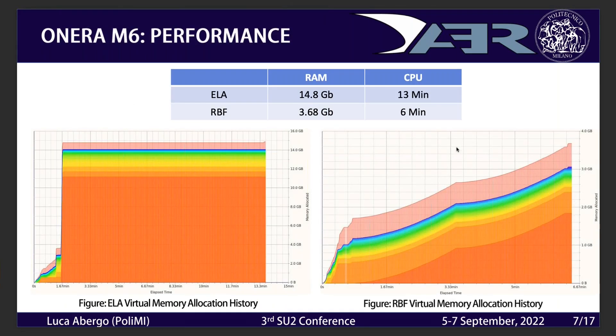We recorded the memory allocation and CPU time during the mesh deformation process and they have two different histories. Linear elasticity immediately allocates all the memory, whereas RBF allocation dynamically increases as the linear system grows in dimension. In the end, RBF took half the time compared to linear elasticity and used only one quarter of the RAM.